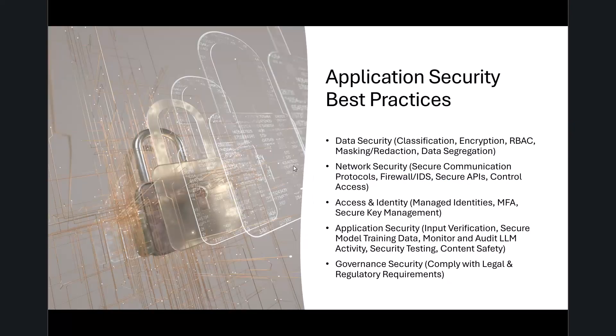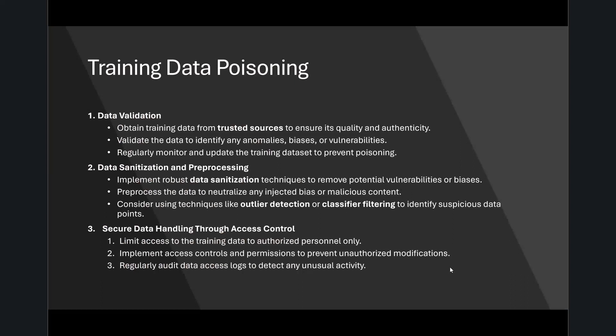For mitigation strategies, application security best practices all still apply. For training data poisoning, make sure you know your source and validate it — especially if using third-party data. Continue to monitor it over time to ensure it's not being poisoned. Do data sanitization and pre-processing, including looking for outliers and using classification mechanisms for more sophisticated pre-processing. And secure data handling using the principle of least privilege — only the people who need access have it — and continue to audit for unusual activity.